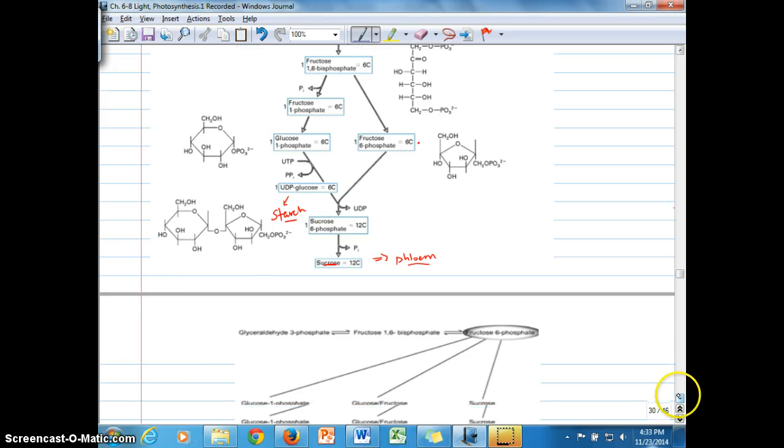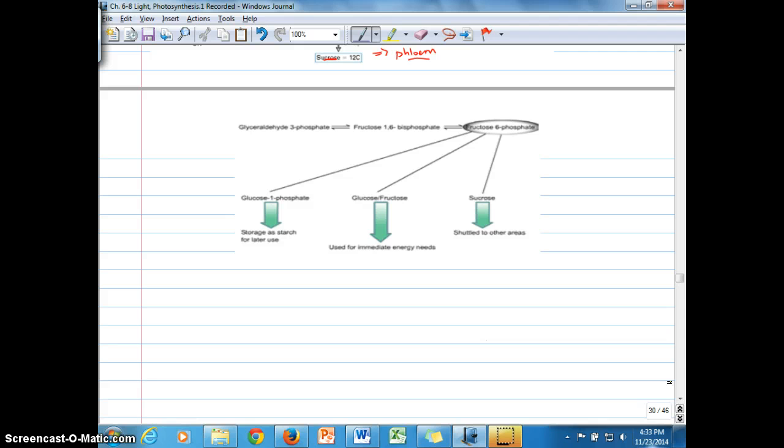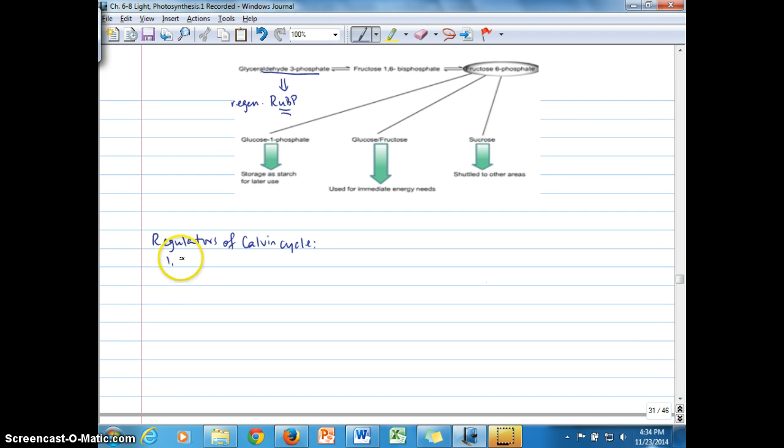That brings us down to some of the regulators here that we want to talk about with regard to the Calvin cycle. One of the important regulators here is where G3P is prioritized to synthesize RUBP, or regeneration of RUBP. We're going to jot down here regulators of the Calvin cycle, which has to do with supply of carbon dioxide to G3P, and then that leads to the regeneration of RUBP. This is going to be prioritized over the synthesis of starch and sucrose and glucose.